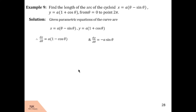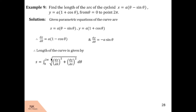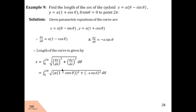We assume s is the length of the curve from θ = 0 to 2π. Then s is given by the integral of the square root of (dx/dθ)² + (dy/dθ)² dθ over the limit 0 to 2π. Substituting the values, we have the integral of the square root of [a(1 − cos θ)]² + [−a sin θ]² dθ.